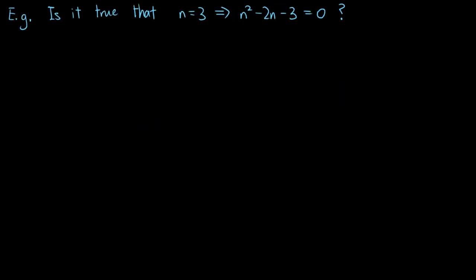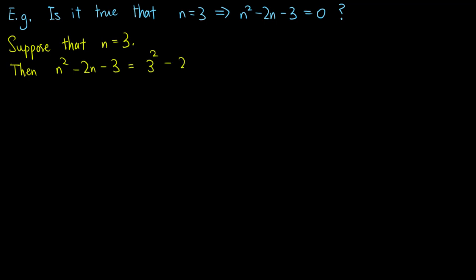Now let's consider an example. We ask: does 'n equals 3' imply 'n squared minus 2n minus 3 equals 0'? To check, we assume the left-hand side is true — suppose n equals 3. Then we check whether the right-hand side is true. We substitute n equals 3 into n squared minus 2n minus 3, and get 3 squared minus 2 times 3 minus 3, which is in fact 0. So n squared minus 2n minus 3 is 0, meaning the right-hand side is true. So the implication is true.